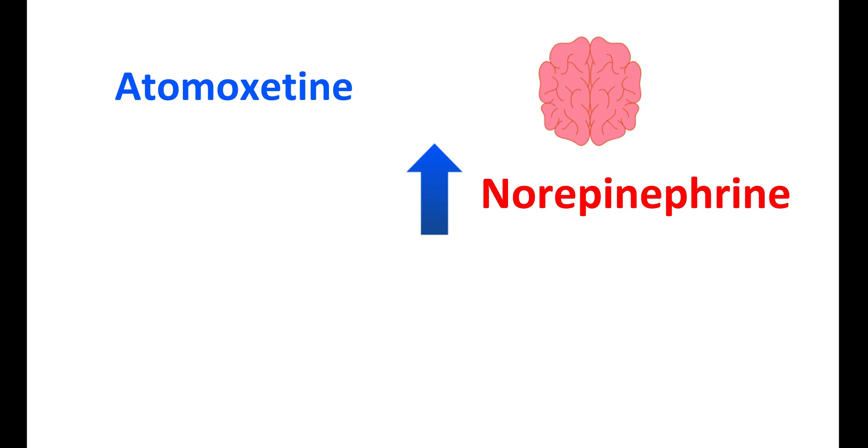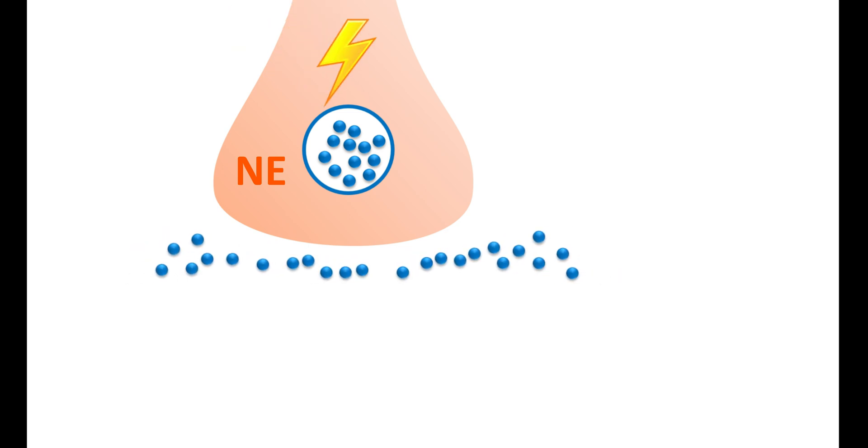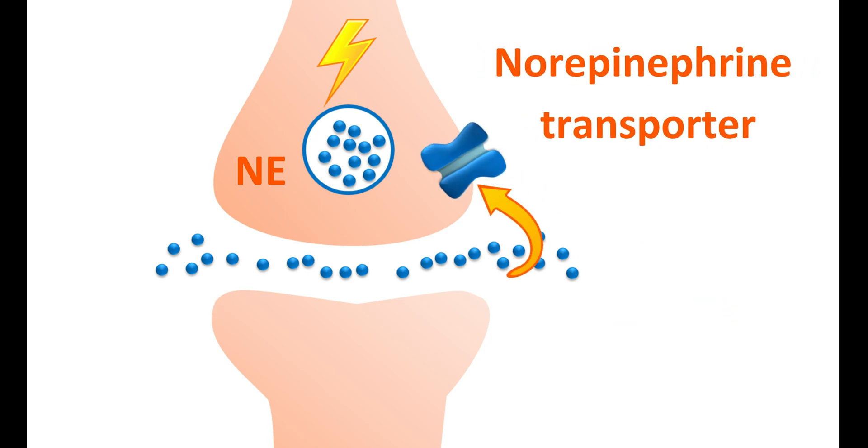This is the presynaptic nerve terminal which stores norepinephrine. When action potential reaches this presynaptic nerve terminal, norepinephrine is released and it can act on the postsynaptic neurons to produce excitation. However, the released norepinephrine can be taken back into the nerve terminal by norepinephrine transporter, commonly known as NET.